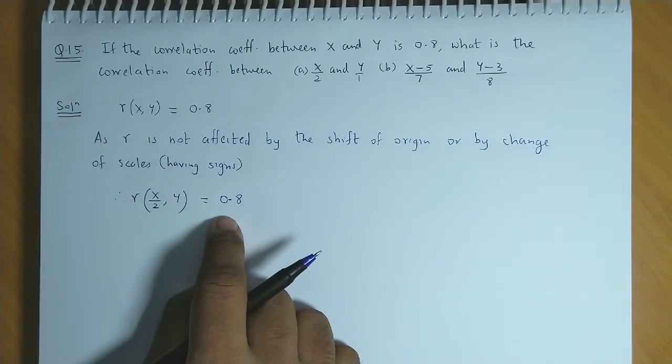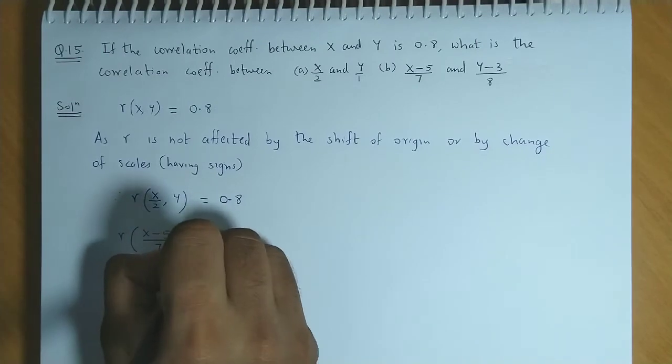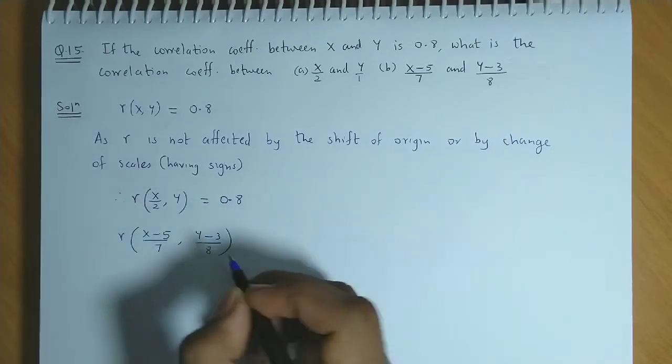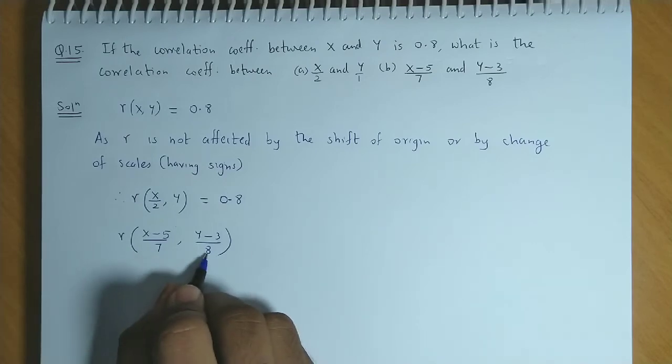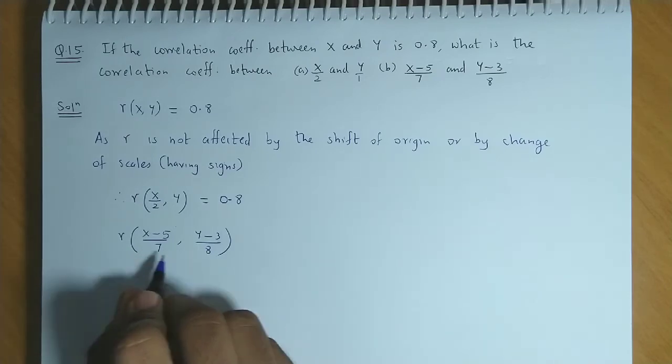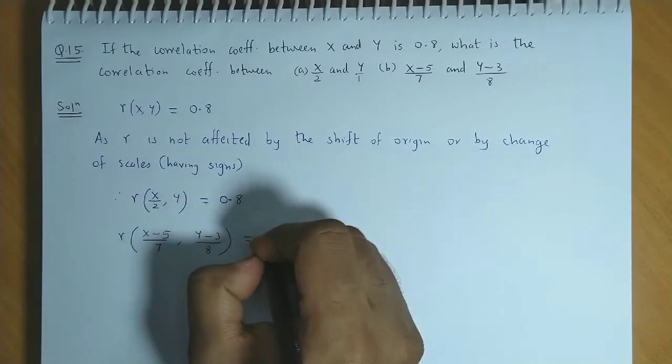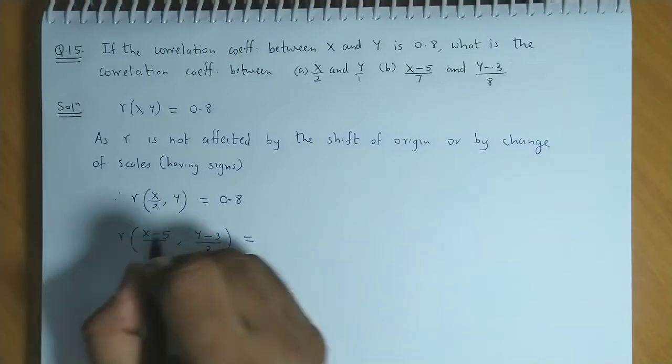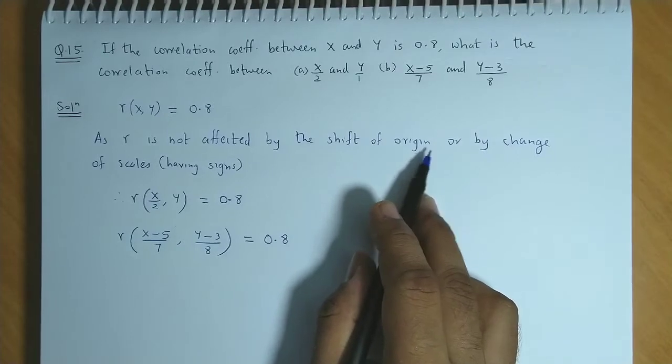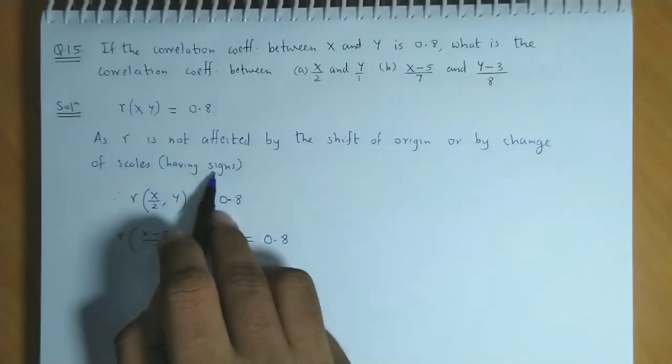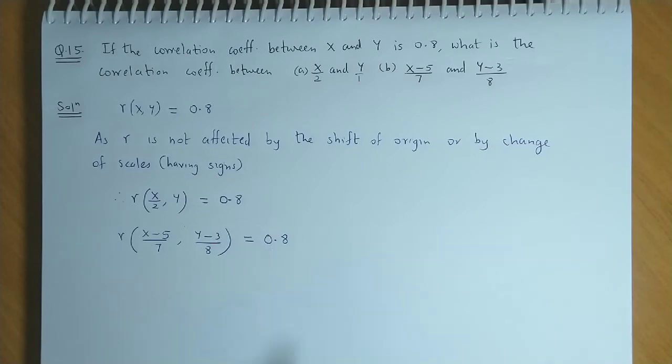The r for x by 2 and y, this value will be 0.8. This won't be affected at all. For r of x minus 5 upon 7 and y minus 3 upon 8, here shift of origin is also done - minus 5 and minus 3. And scaling is also done, change of scale. But both scales have the same sign. Divide by 7 is positive, divide by 8 is also positive. So here also r won't show any effect. There won't be any change in the value of r. Value of r will still remain 0.8. So remember, r is not affected by shift of origin or by change of scale, but the scale should have the same sign. Here also the value is 0.8, and in this case also the value remains 0.8.